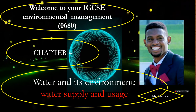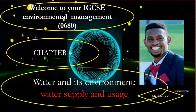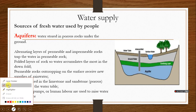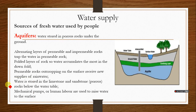We'll look at water supply and water usage. Water supply covers the major sources of fresh water used by humans for survival. The first source of freshwater is groundwater aquifers, which are water stored in porous rocks under the ground.